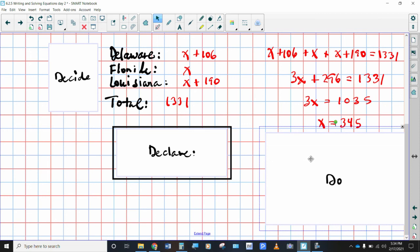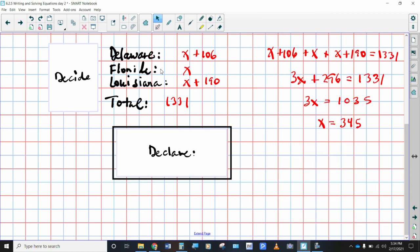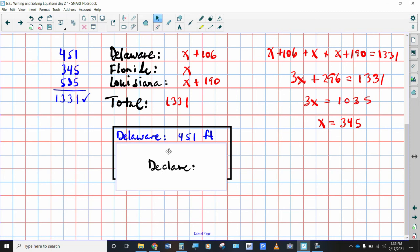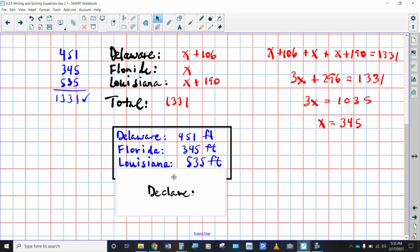So that means that the elevation, or I should say, the highest elevation in Florida must be 345 feet above sea level. Delaware would be 106 more than that. So that would be 451. And Louisiana would be 190 more than that. So that would be 535. Add those three totals together, and you get our magic 1331 for the total. So we are declaring our answer for all of them. Delaware was 451 feet. Florida has the highest elevation of 345 feet, and Louisiana has a high elevation of 535 feet.